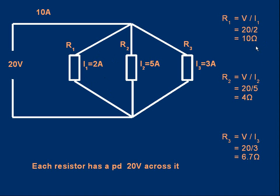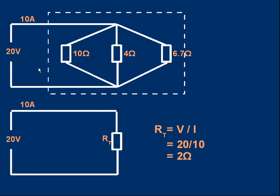Resistor 2: 20 volts and 5 amps gives 20/5 = 4 ohms. Resistor 3: 20 volts across it, 3 amps through it gives 6.7 ohms to two significant figures — we don't like giving fractions as final answers because it implies more precision than the experimental error allows. So we have three resistors: 10 ohms, 4 ohms, and 6.7 ohms.